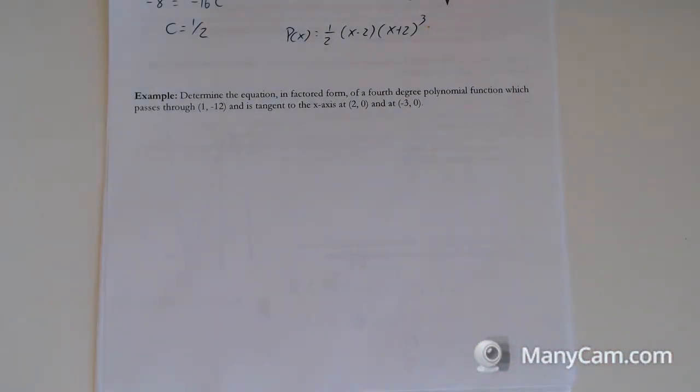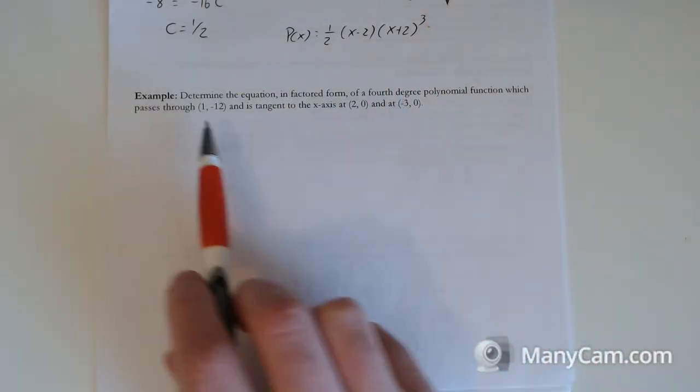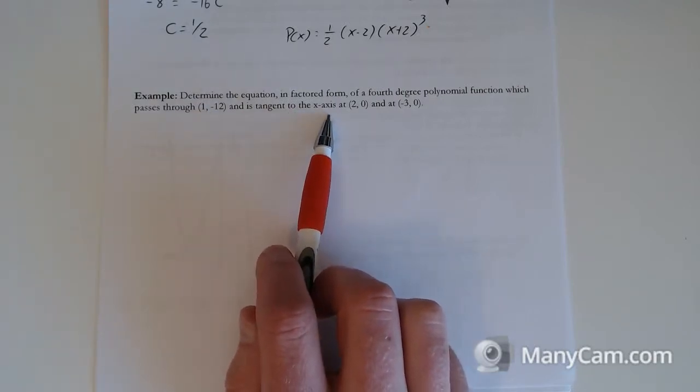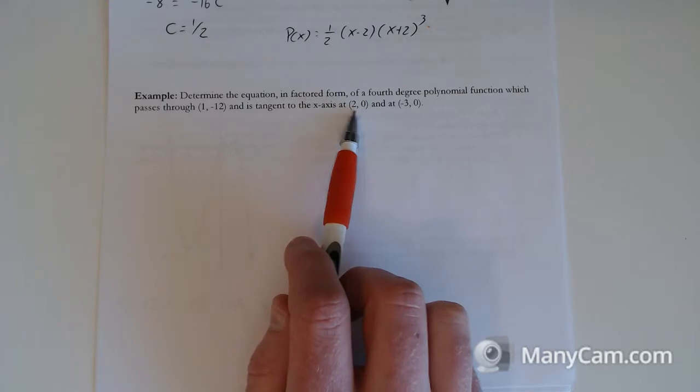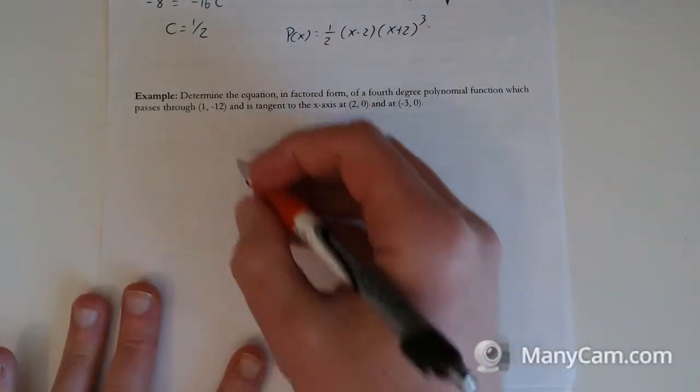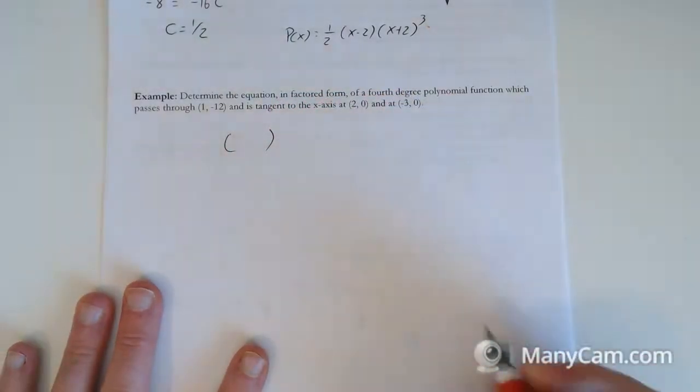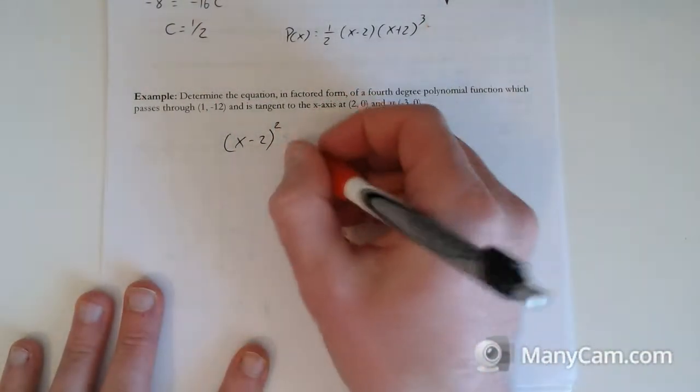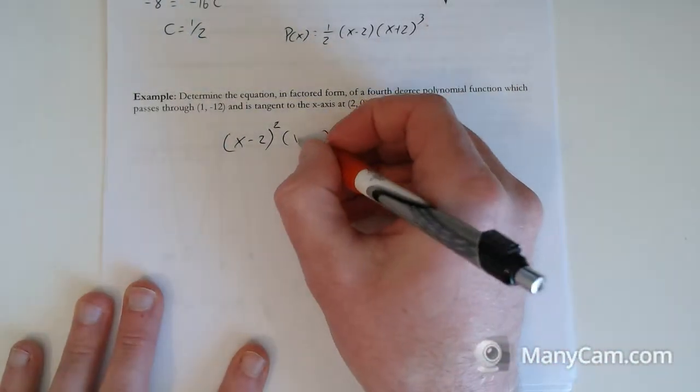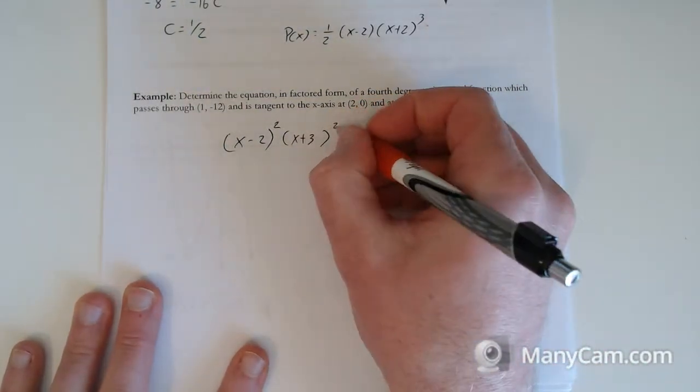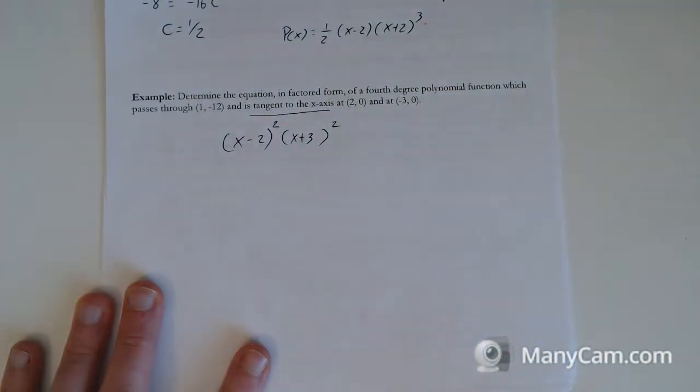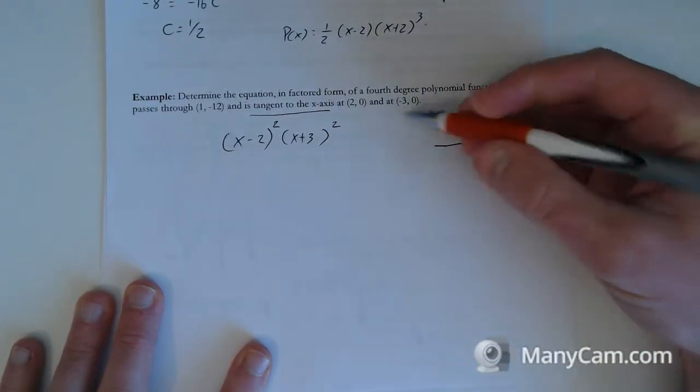So determine the equation in factored form of a fourth degree polynomial. So we should have four different factors. Which passes through this point. We'll use that last. And is tangent to the x-axis. So it has a slope of 0 at, and these are roots. So these are both second degree solutions then. So x minus 2 from the first one. If you sub in 2, it goes to 0. Second degree. And x plus 3 from the second one. Second degree as well.